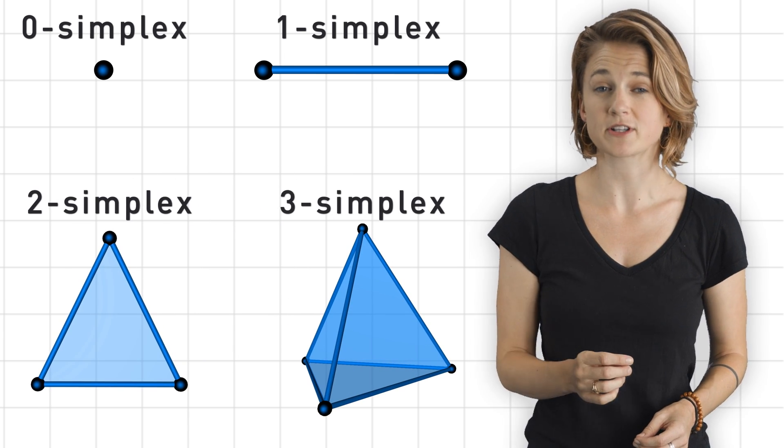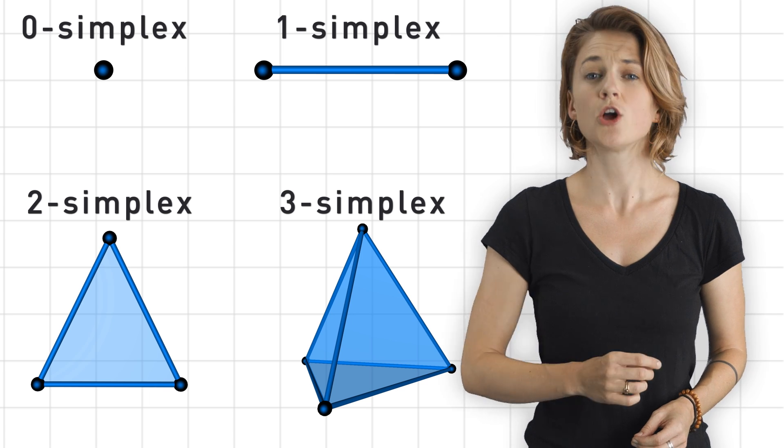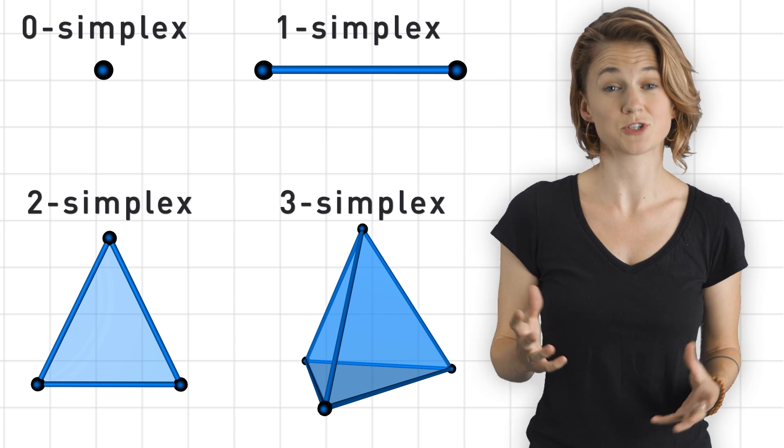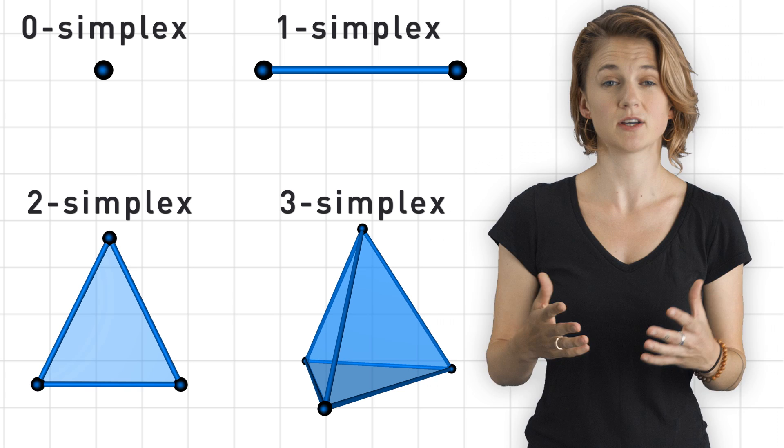A three simplex is four vertices connected pairwise by edges joined by four faces, which are filled in to form a solid, a tetrahedron.